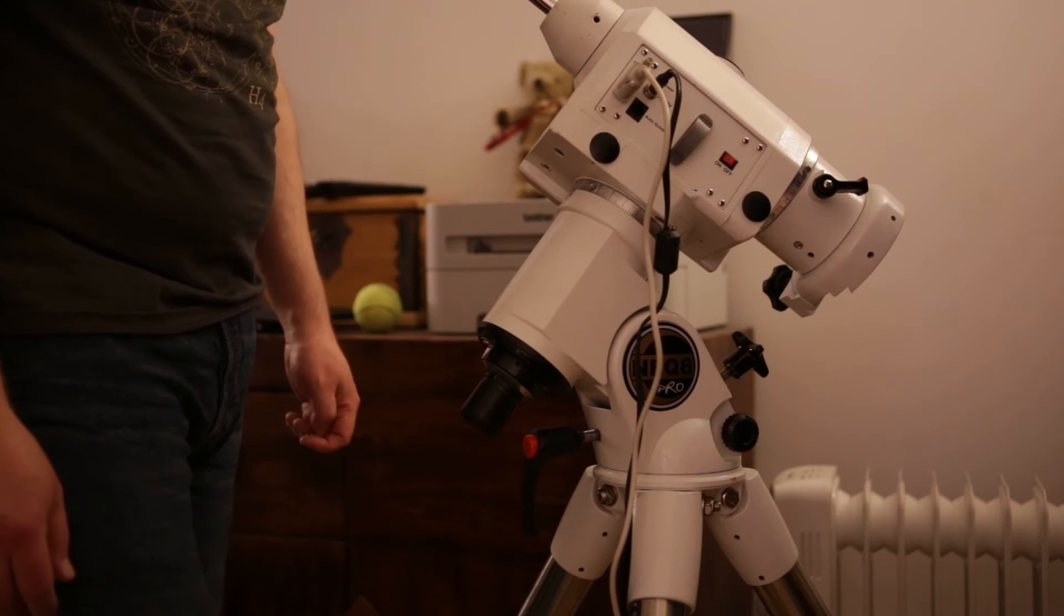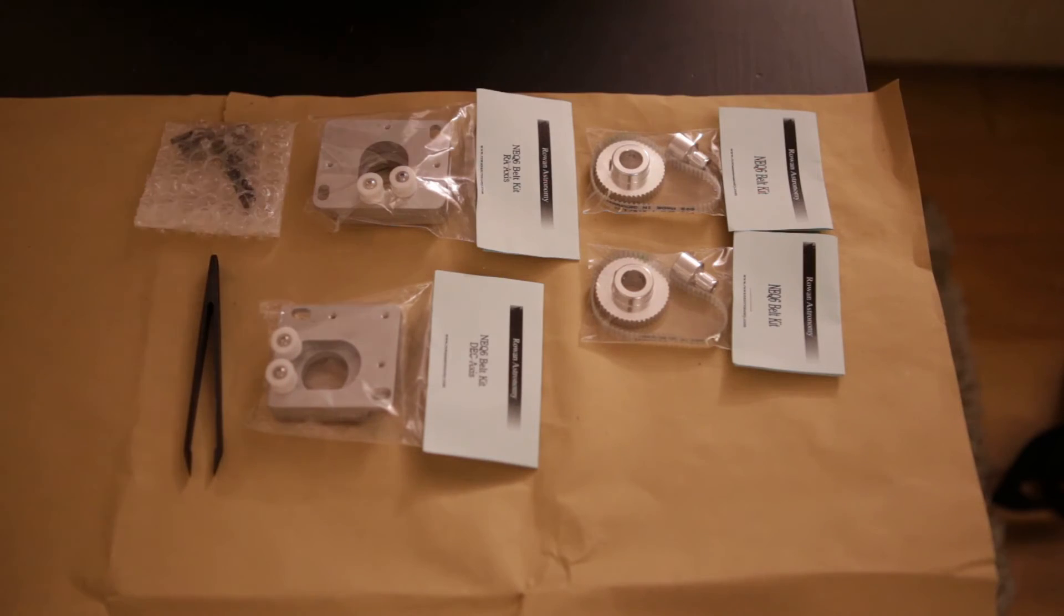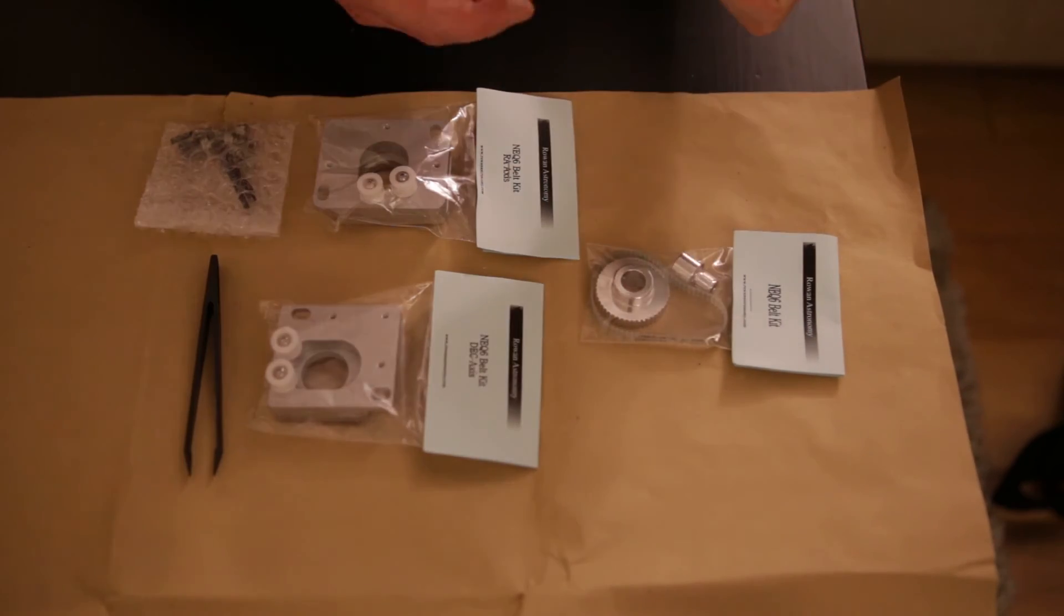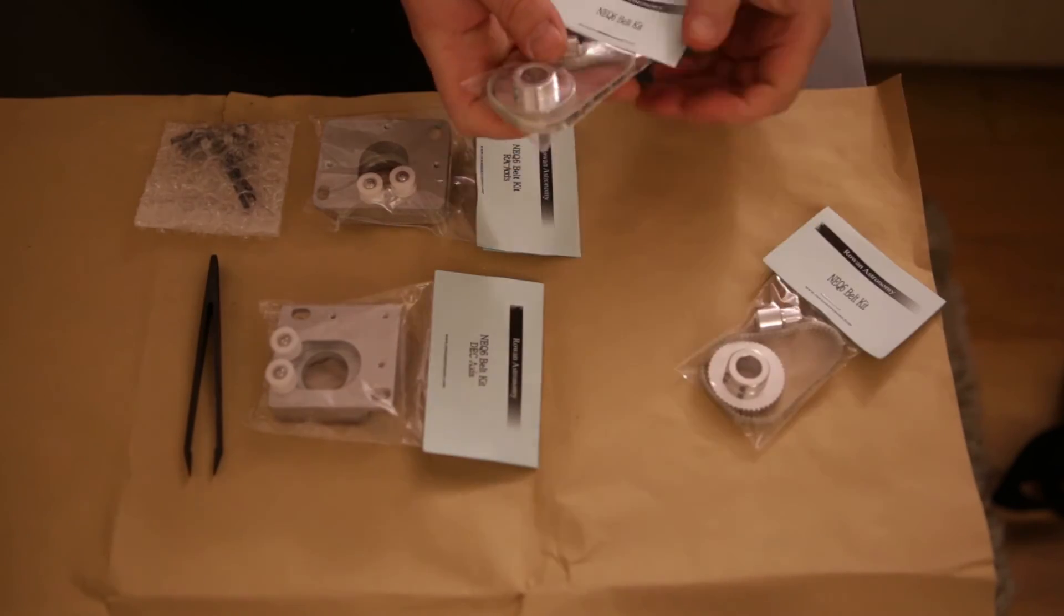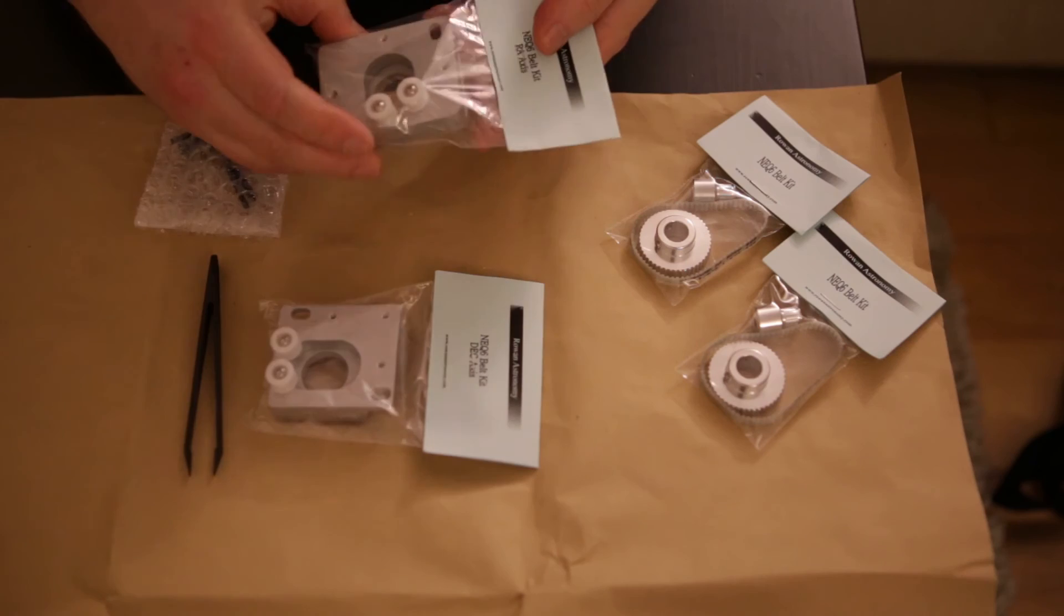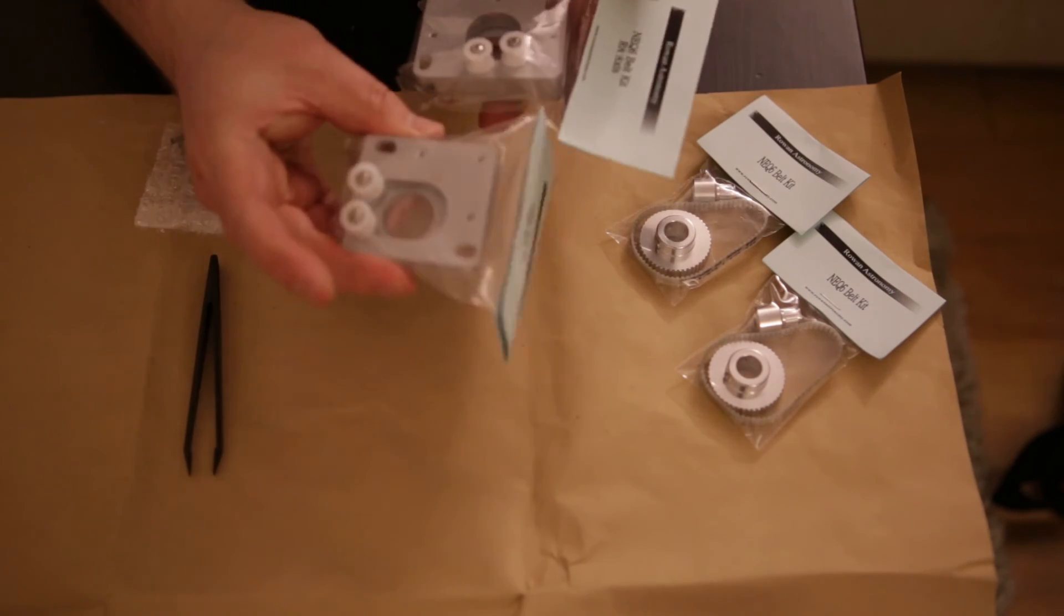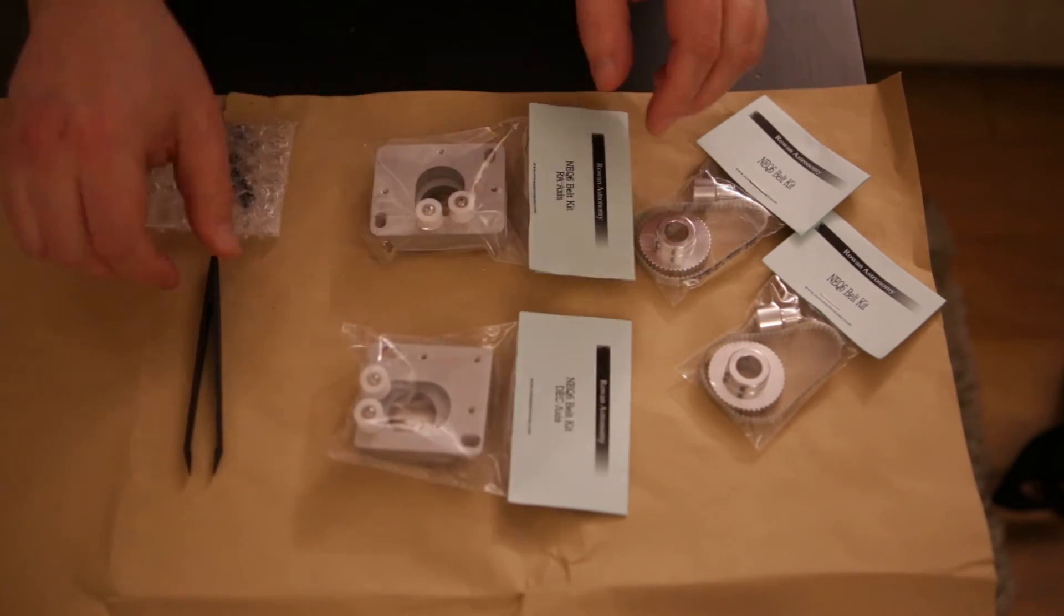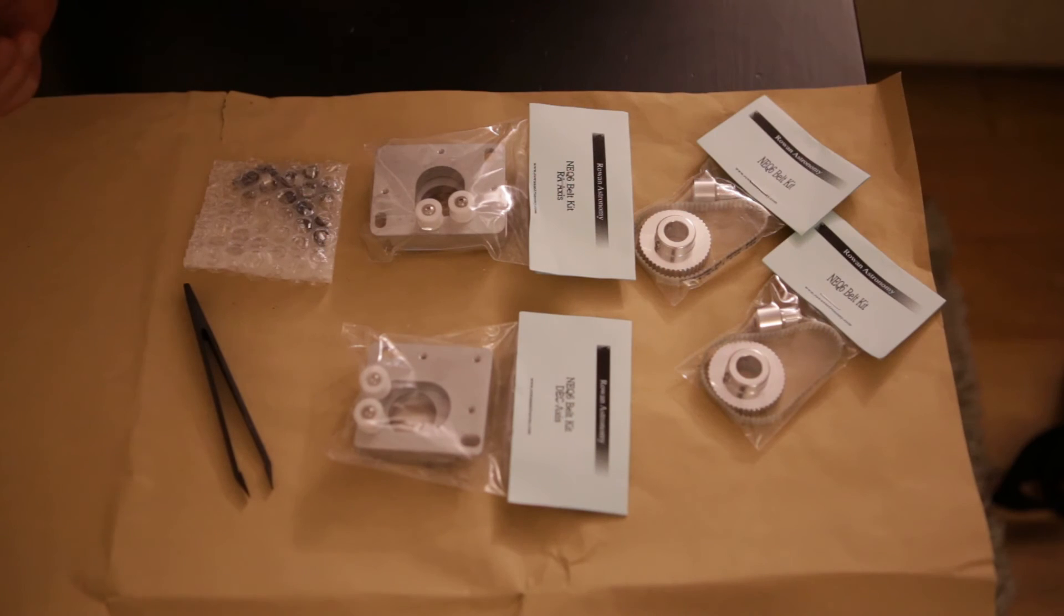So this is the modification kit that I bought from Rowan Astronomy or Rowan Engineering. Just Google it and you will find it. It comes with two sets of pulleys and belts, one for the RA axis, one for the dec axis. And then you have these mounting plates for RA and dec axis as well. They're a little bit different so don't mix them up. And a pair of tweezers and some Allen keys and screws.